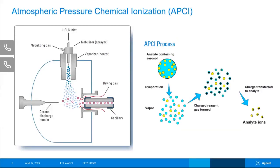So how does APCI work? The classical process is: the mobile phase and analytes are nebulized, so they're broken up into really small droplets. Then the droplets are vaporized using a vaporized heater, and that's where the thermally labile point can come into play. Then the mobile phase molecules are ionized by electrons from the corona discharge needle, and the analyte molecules are ionized by the mobile phase ions. Depending on if you're doing positive mode or negative mode, there can be different ways that APCI is working for your target compounds.